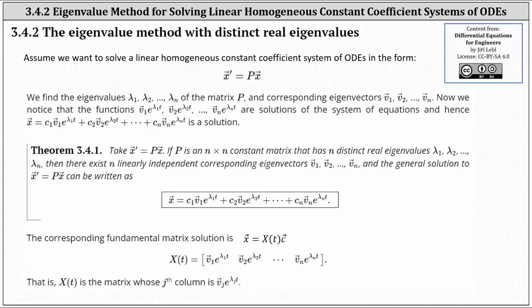Given x prime equals p times x, if p is an n by n constant matrix that has n distinct real eigenvalues lambda sub 1 through lambda sub n, then there are n linearly independent corresponding eigenvectors v sub 1 through v sub n, and the general solution can be written as x equals c sub 1 times v sub 1 e to the lambda sub 1 t plus c sub 2 times v sub 2 e to the lambda sub 2 t, plus through plus c sub n times v sub n e to the lambda sub n t. The corresponding fundamental matrix solution is x equals big X of t times vector c, where big X of t is a matrix whose j-th column is v sub j times e to the power of lambda sub j t.